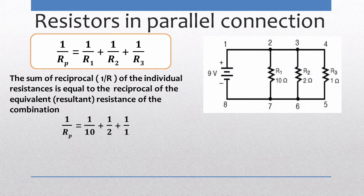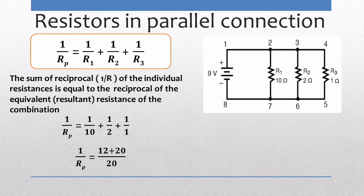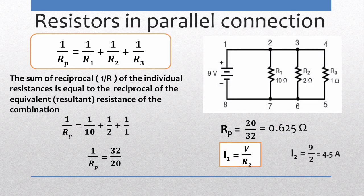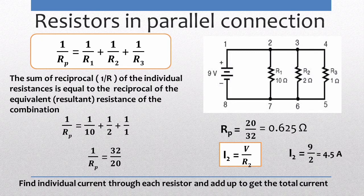To find the equivalent resistance in the given circuit: 1/Rp = 1/10 + 1/2 + 1/1. Simplifying, Rp = 20/32 = 0.625 Ω. To find the total current we first find the individual currents; for example, I2 = V/R2 = 4.5 A. Similarly find I1 and I3, then sum the individual currents to get the total current.